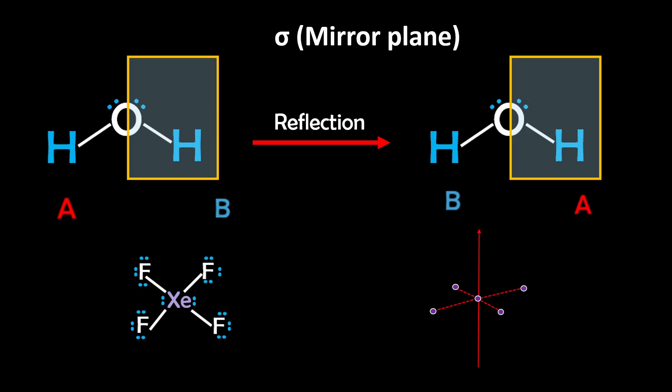Mirror plane or reflection. Water has a vertical mirror plane that cuts straight through the oxygen atom and between the two hydrogens. If you reflect the molecules across this plane, the two hydrogens swap places, but the molecule looks identical.